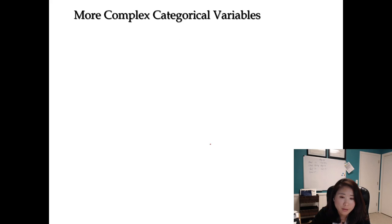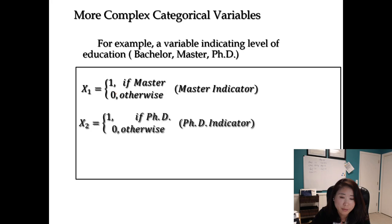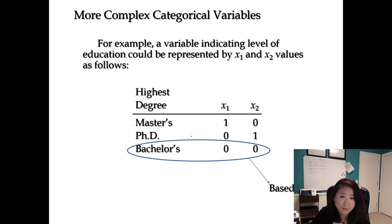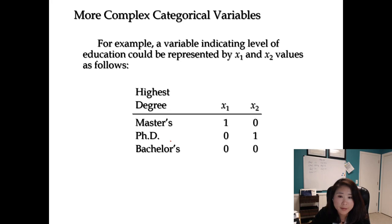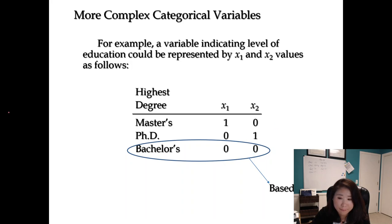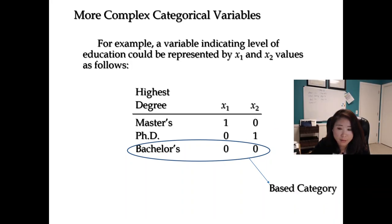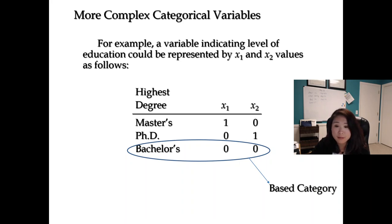For a bachelor's degree: X1 equals zero (not master) and X2 also equals zero (not PhD), so the combination (0, 0) indicates bachelor. Now you understand why we don't need k dummy variables — we always have one level where all dummy variables equal zero. That level is called the base category or base level. I want to define this clearly because later, when interpreting the partial coefficient for a dummy variable, you must identify the base level before you can interpret it correctly. Keep in mind how to identify your base level.